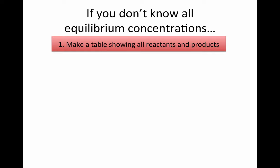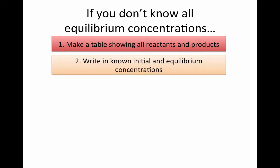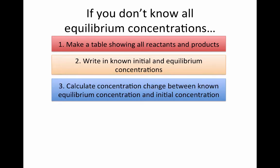The first step is to make a table that shows all the reactants and the products. We're going to write the concentrations that we know into our table, whether they be initial concentrations or equilibrium concentrations. We're then going to find a chemical species where we know both the initial and equilibrium concentrations, and calculate the concentration change that occurs during the reaction.